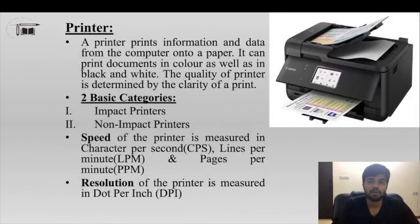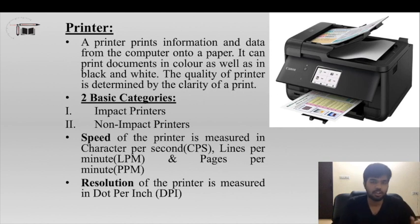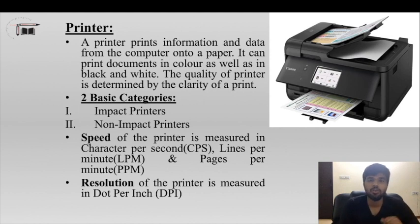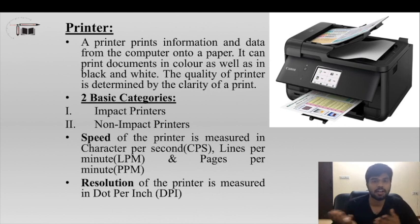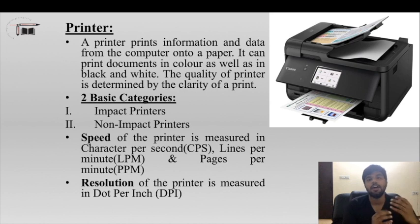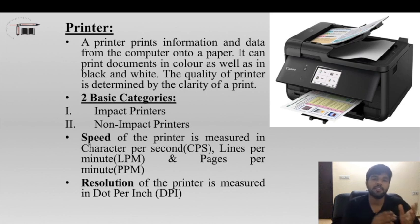The next output device is the printer. You can use it to print hall tickets and other documents. Printers come in color and black-and-white versions. They are divided into two categories: impact printers and non-impact printers.